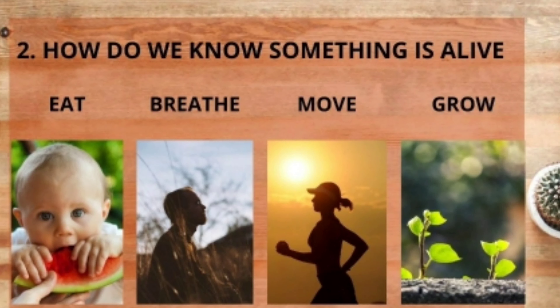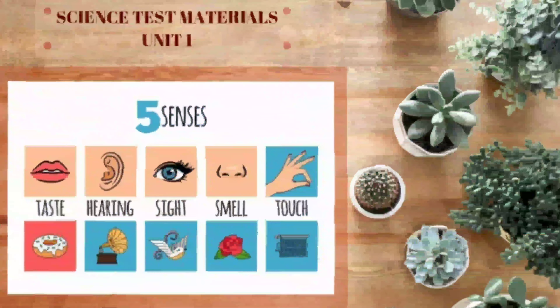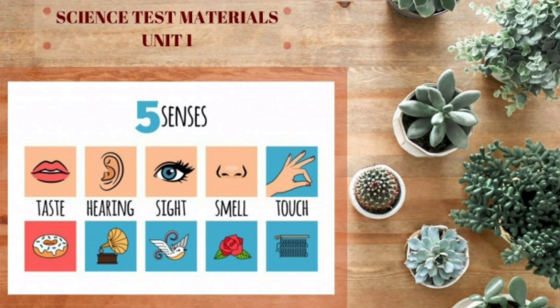The second material is: how do we know something is alive? Living things need something to eat. They can breathe, move, and grow. We, as human beings, use our senses. We have five senses. We taste something with our tongue, we hear something with our ears, we see something with our eyes, we smell something with our nose, and we touch something with our hands.